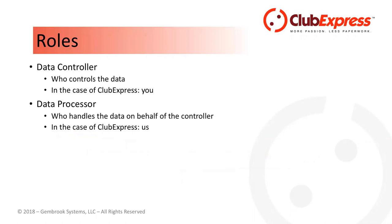The GDPR defines two roles. The first is the data controller — the organization or person who controls the data. In the context of Club Express, that is you: your club, association, or village. The second is the data processor — an organization to which the controller has outsourced the processing of that data on their behalf. In the case of Club Express, that's us. We are your data processor; you are the data controller.